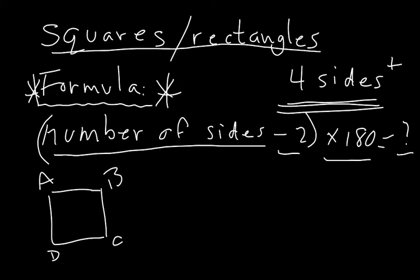You take that answer and multiply it by 180. This gives you the total amount of all the interior angles—the angle sum of all the interior angles of your particular polygon. The next few examples are going to be polygons where I will apply the formula. So we have here a square with vertices A, B, C, D. It obviously has four sides.